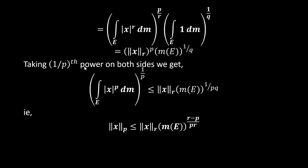Taking the 1/p-th power on both sides, we get (∫_E |x|^p dM)^(1/p) ≤ ‖x‖_r · M(E)^(1/(pq)). Now 1/(pq) can be written as (r−p)/(pr), so by the definition of the norm, ‖x‖_p ≤ ‖x‖_r · M(E)^((r−p)/pr). This is our result.